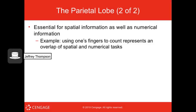The parietal lobe is also important for spatial information and numerical information. Counting with your fingers is a good example of the overlap of spatial and numerical tasks — that coordination involves the parietal lobe.